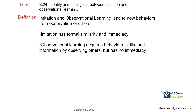Imitation and observational learning both lead to new behaviors from observation of others. At their simplest essence, we're learning and engaging in new behaviors by observing others. Young children, adults — it doesn't matter who. We all learn by watching. That's one of our primary methods of learning. Think about when you're in a new environment — you're watching what other people are doing and engaging in similar or the same behaviors.